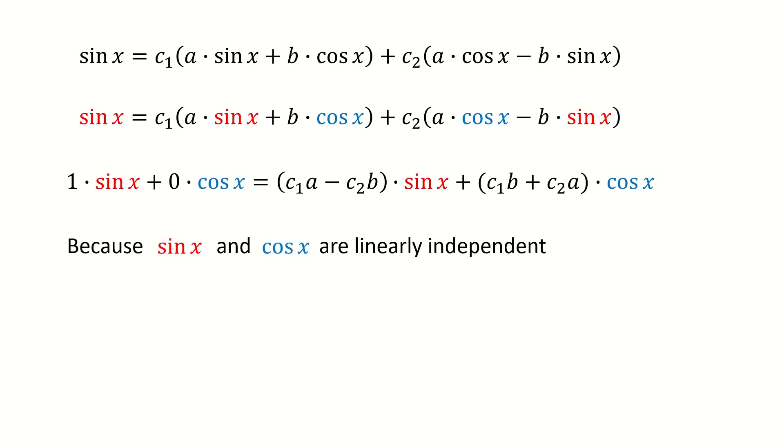Because sine x and cosine x are linearly independent functions, that means the coefficient in front of sine x on the left-hand side must equal the coefficient in front of sine x on the right-hand side. And similarly for the cosine term. Then we got these two equations.